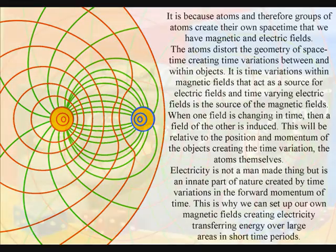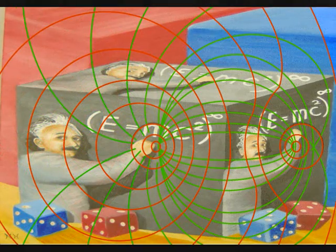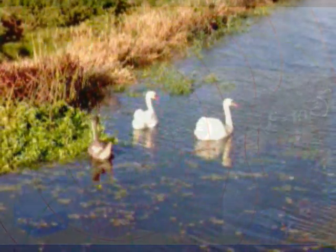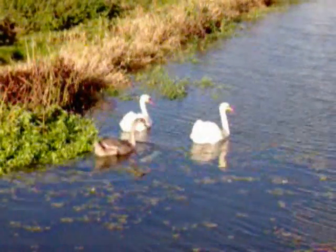A time-varying electric field acts as a source of a magnetic field, and the time-varying magnetic field is the source of electric fields. When either field is changing in time, then a field of the other is induced. This will be relative to the position and momentum of the objects creating the time variation, the atoms themselves.